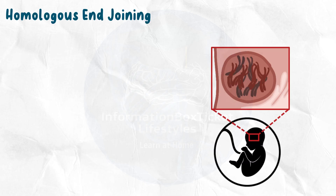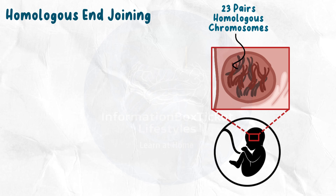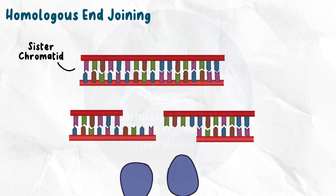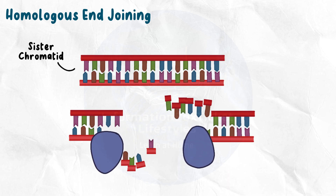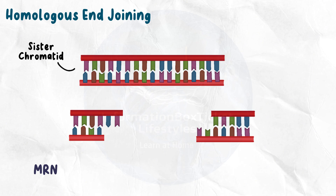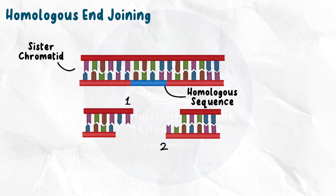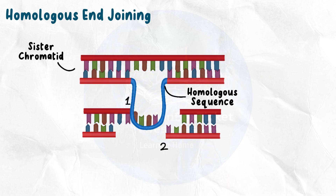Another repair method that depends on homologous recombination is known as homologous end joining. Our 46 chromosomes are organized into 23 pairs of homologous chromosomes, which share nucleotide sequences and code for the same traits. Consequently, the sister chromatid may be used to fix a double-strand break. A protein complex known as MRN attaches to both ends of the broken DNA and brings in exonucleases that cut nucleotides from one strand. The ends of the broken DNA are called End1 and End2, and End1 is placed near a homologous sequence found in the same spot on the homologous sister chromatid.